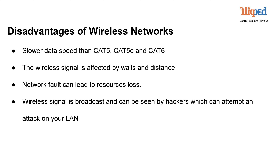Signal Interference: The wireless signal in a network can be affected by physical obstacles such as walls and distance between devices and the access point. Signal strength and quality may degrade when passing through walls or encountering interference from other electronic devices, leading to potential connectivity issues and reduced network performance.